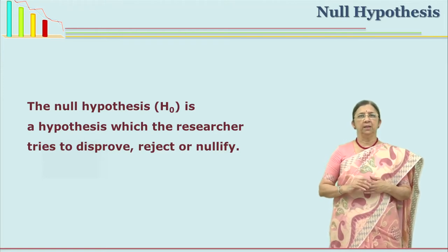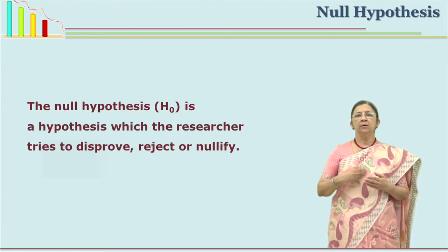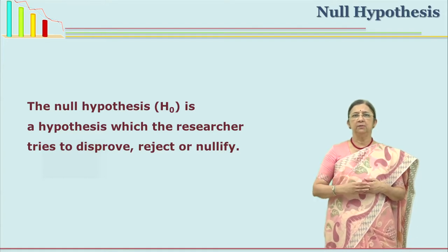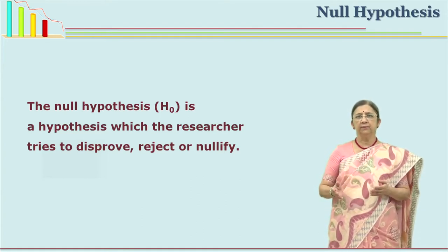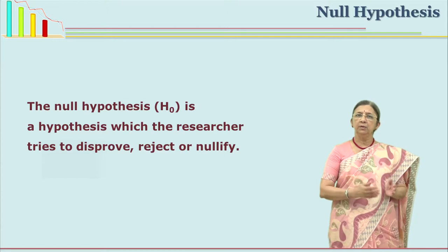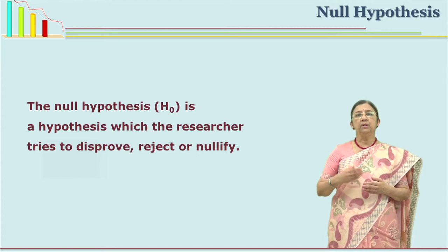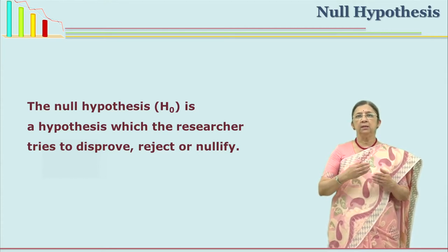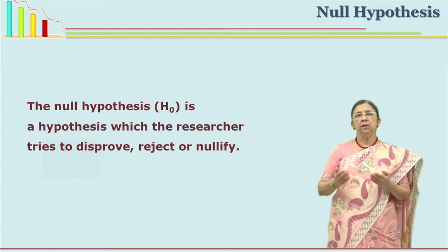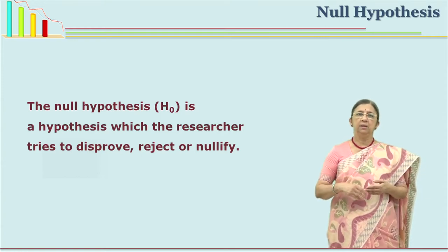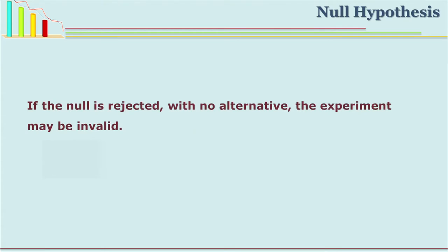You cannot accept null hypothesis. If your difference or your T ratio or whatever statistic you use shows the difference is not significant, that does not mean you have to accept it — you cannot reject the null hypothesis because of this. That means whatever you have got may be because of chance, so you have to explore it further. In this situation we say we cannot reject the null hypothesis; we have to retain it. There must be an alternate hypothesis — if you reject the null hypothesis, that hypothesis is verified; if you do not have one, your experiment is invalid.